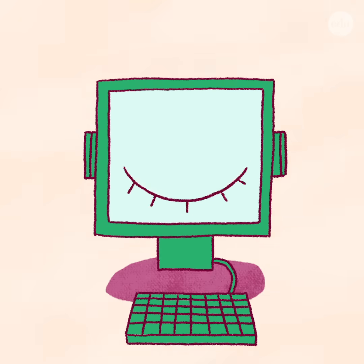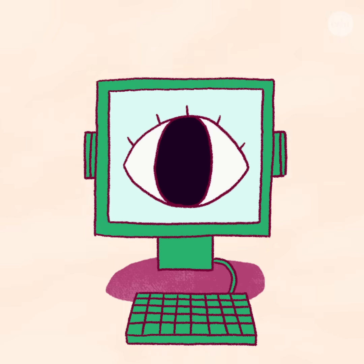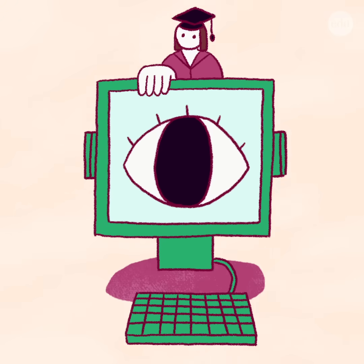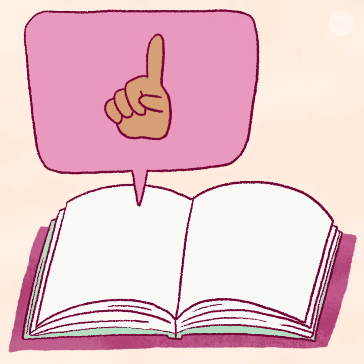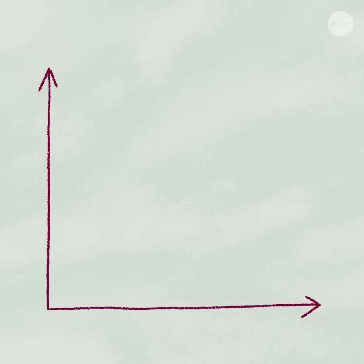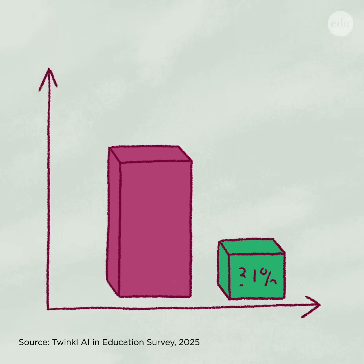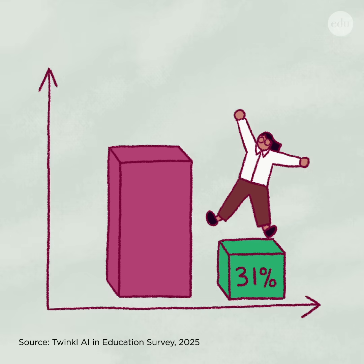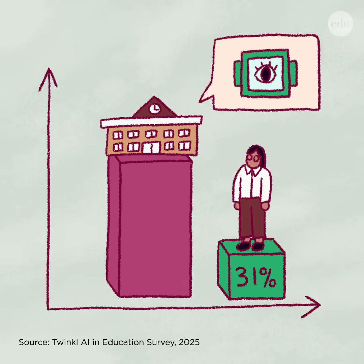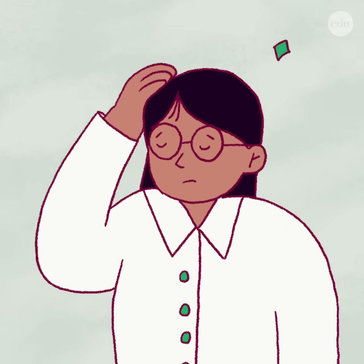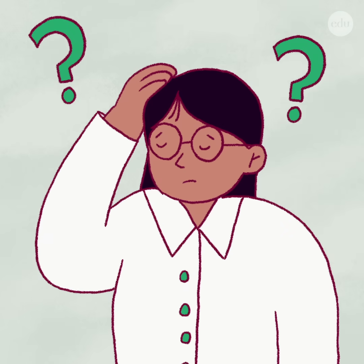It's clear by now that artificial intelligence is quickly changing the education landscape. But for every AI tool promising to revolutionize teaching, there's an article criticizing the technology's influence on student learning. While the stakes are high, a 2025 survey found that only 31% of teachers in the U.S. have received guidance from their schools on how to deal with AI ethically and effectively. Many don't know where to begin talking about it in their classrooms.